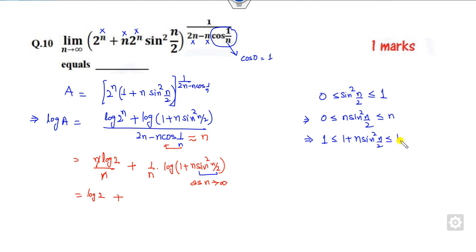Since log is an increasing function, you can take the log on both sides. Log 1 is 0, and the log of the upper bound is here. Divide both sides by n. Now take the limit as n approaches infinity on both sides; this becomes 0. This is our target. This is infinity over infinity.